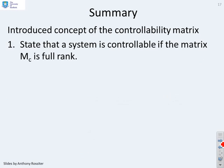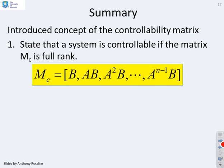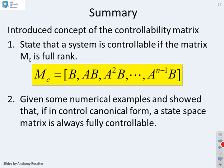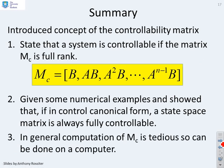So in summary, we've introduced the concept of the controllability matrix, and we've shown or stated that a system is controllable if the matrix is full rank. And that's how the matrix is written: M_c = [B, AB, A²B, ..., A^(n-1)B]. We've given some numerical examples and showed that if you're in control canonical form, then you're always fully controllable. In general, the computation of this matrix is rather tedious, and finding the rank would also be tedious, so you should do this on a computer.